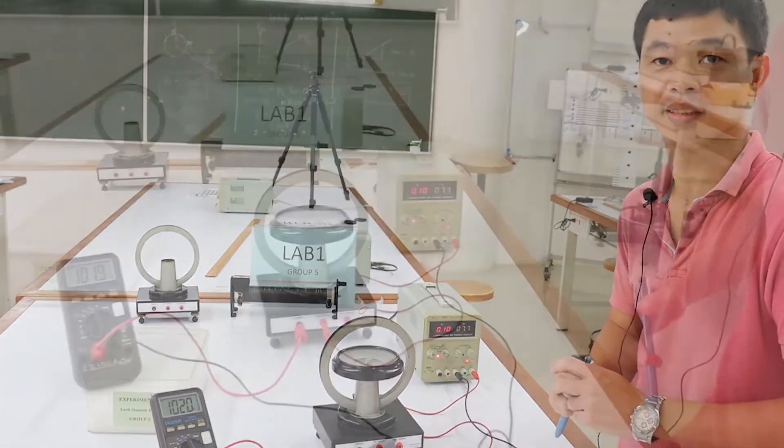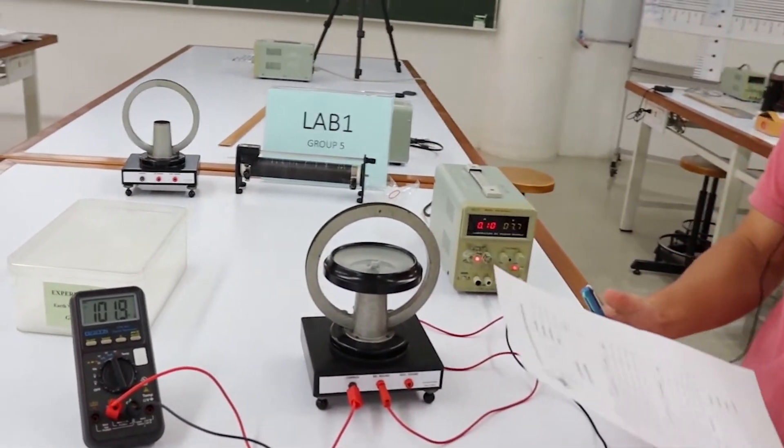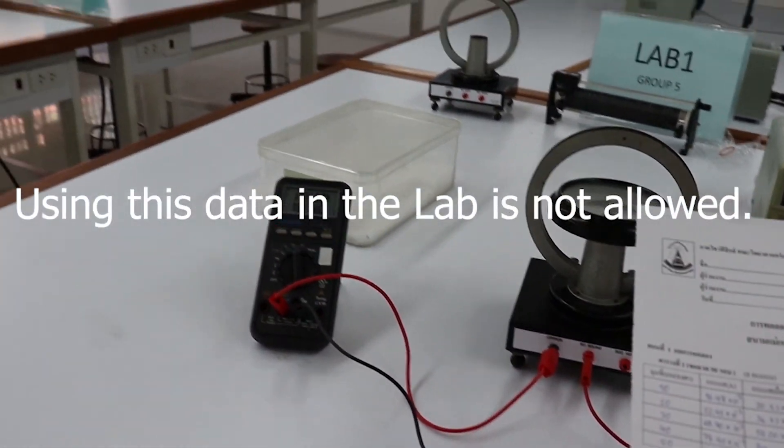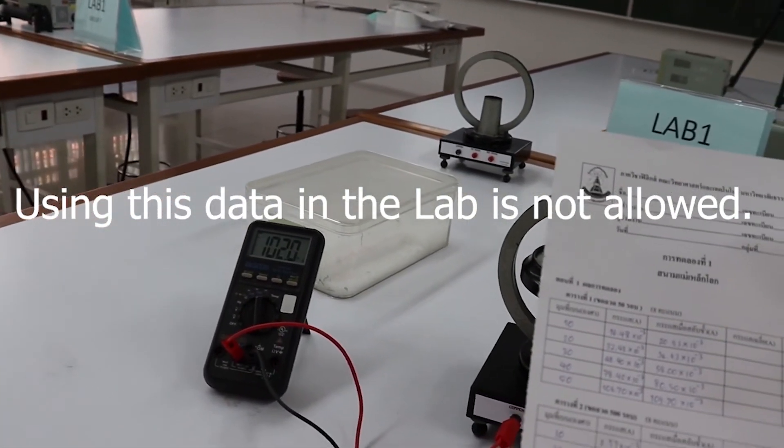In the part 2, change the coil from 50 to 500 turns and using DC power supply of 2 volts and try it as well as in part 1.